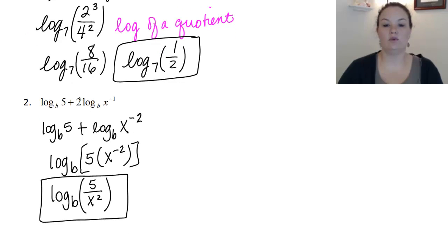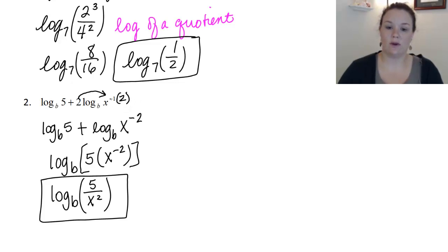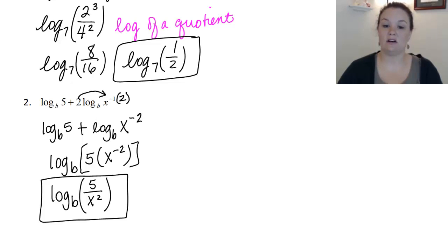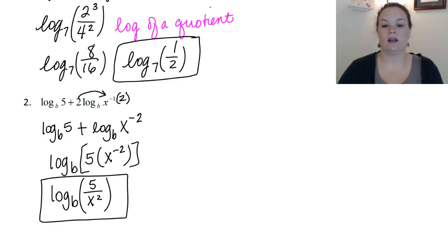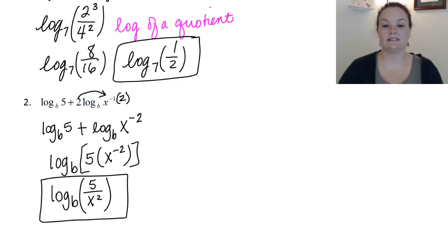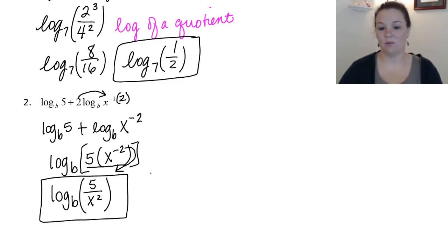On the second practice problem, I need to move this 2 back up into the exponent. Notice there's already an exponent there, so when I move it back up, I multiply it times the number already there: X to the negative 1 times 2 gives me X to the negative 2. I have an addition of log terms, so that condenses into multiplication. 5 times X to the negative 2 gives me 5X to the negative 2. We don't like negative exponents in our answers, so I move that X to the negative 2 across the fraction line — it becomes X squared on the bottom — leaving log base B of 5 over X squared.